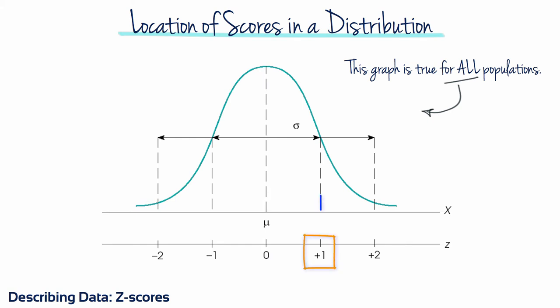A z-score of plus 1 corresponds to a position exactly one standard deviation above the mean. A z-score of plus 2 is always located exactly two standard deviations above the mean. The locations identified by z-scores are the same for all distributions, no matter what mean or standard deviation the distribution may have.